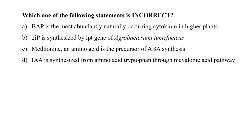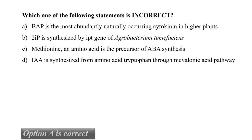The next question is: which one of the following statements is incorrect? Statement A — that BAP is the most abundantly naturally occurring cytokinin in higher plants — is incorrect. This is because 6-benzylaminopurine (BAP) is a synthetic cytokinin, not a natural cytokinin, which together with auxins elicits plant growth and development responses. BAP is a widely used cytokinin supplement to plant growth media such as Murashige and Skoog medium. So our correct option is A.